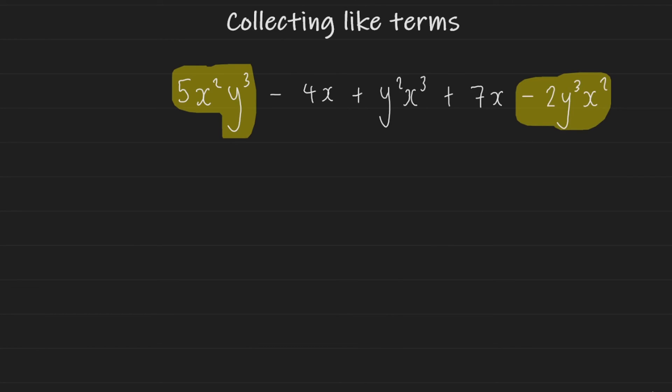And now we can collect these terms together. I have five lots of these terms and I'm taking away two lots of them. So that's going to leave me with three lots of them. Three lots of x squared y cubed. Alphabetical order, remember.